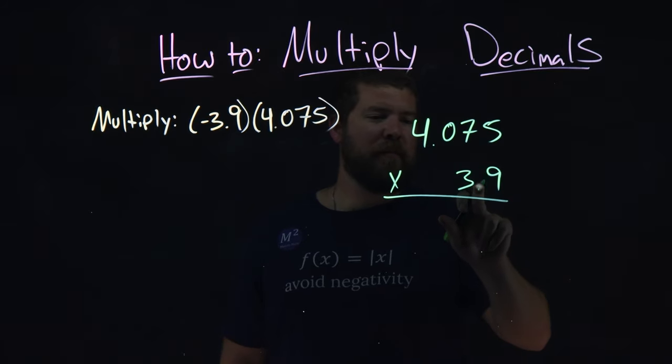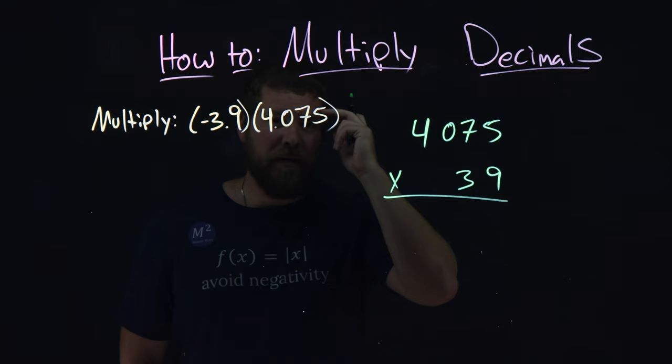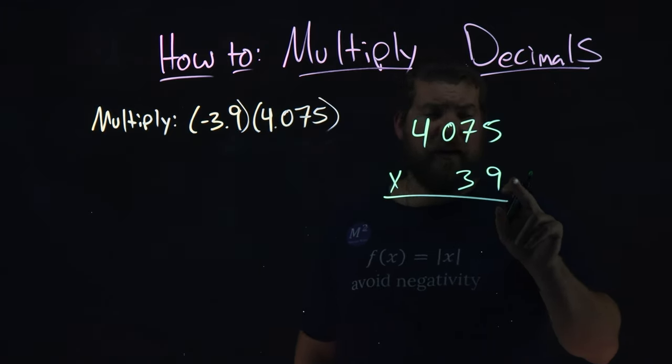Now, I'm going to ignore the decimals for right now. I'm kind of erasing that. And I'm going to ignore the negative. I'm just going to keep that in mind for the end. Let's go through our process now.